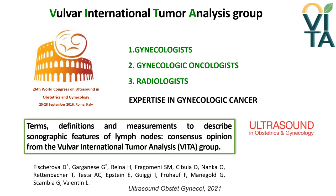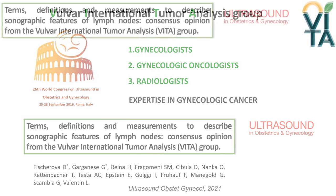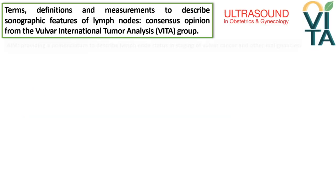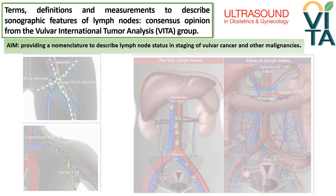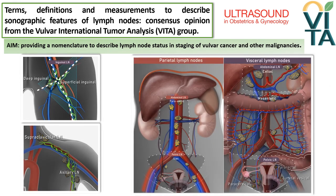This established collaborative group agreed on terminology, definition, and measurement technique to describe the inguinal lymph nodes, as published in the Ultrasound in Obstetrics and Gynecology Journal. The aim of the consensus was providing nomenclature to describe lymph nodes in the staging of vulvar cancer and other malignancies. The proposed terminology describes peripheral inguinal lymph nodes, but it can be used for all other lymph nodes that can be a site of lymphatic spread from malignancies.